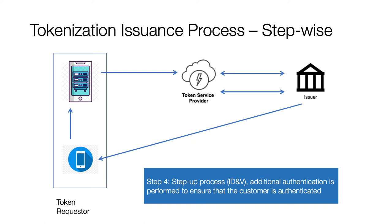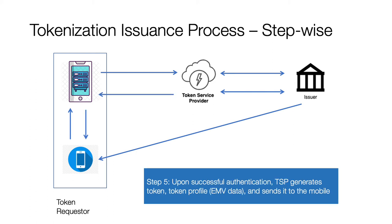Once the assurance process is completed and the card and customer are confirmed authentic, the TSP performs token generation — generating the token number — and also the token issuance process. For NFC-based devices where an SDK resides on the mobile, EMV-related data is also generated; otherwise it is not required. Finally, the TSP pushes all the data to the token requester through to the end mobile device so that it can be provisioned directly onto the mobile.